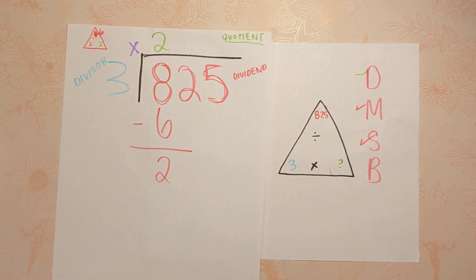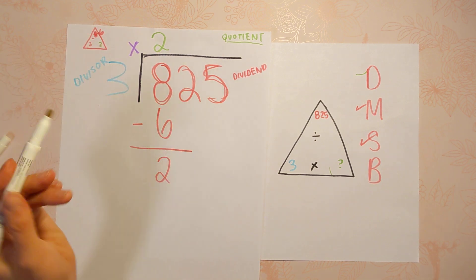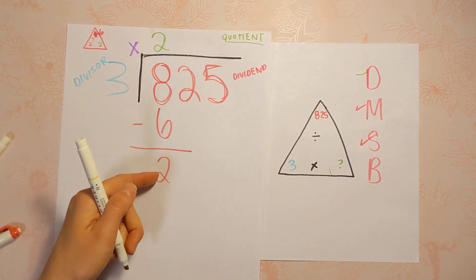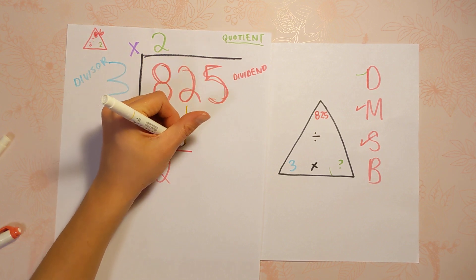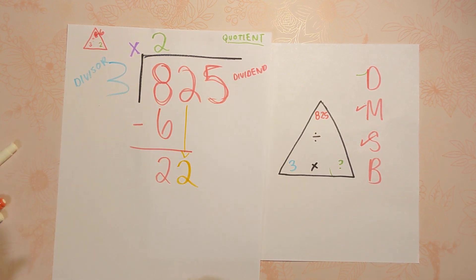Done. The last step for burgers is bring down. So we're going to bring down. What are we bringing down? The next digit, of course, because we worked with this digit, but we're not done. This is a bigger number. So we're going to bring this 2 down and join it with the 2 we already have because we've got a leftover there. 22. Great.